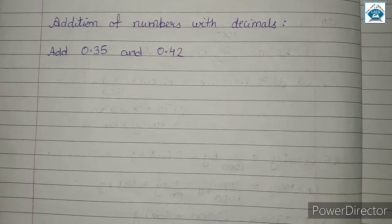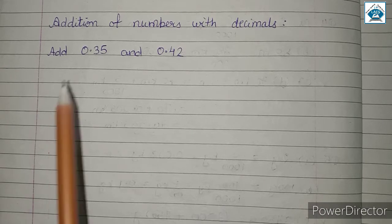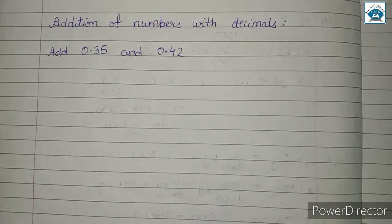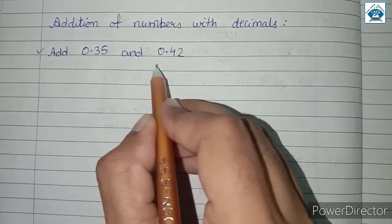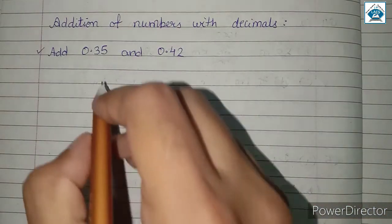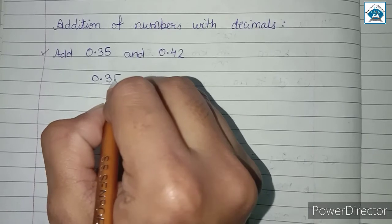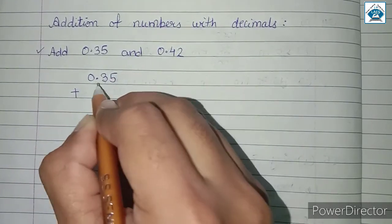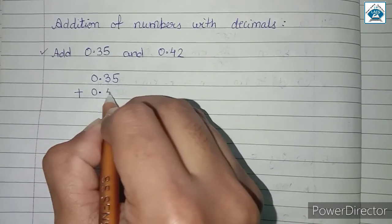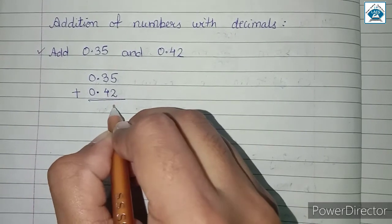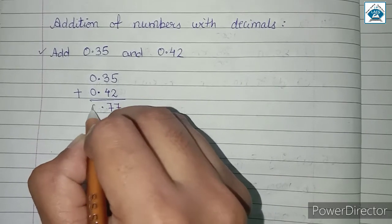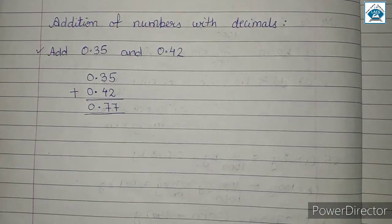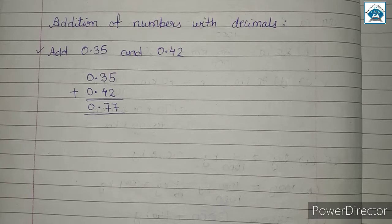Hello students, let us continue chapter 8 decimals. Today we will be discussing the topic addition of numbers with decimals. If we were asked to add 0.35 and 0.42, then how will we do it? It is very simple. We will do vertical addition: 0.35 plus 0.42. Point under point. 5 plus 2 is 7, 3 plus 4 is 7, point as it is, and 0 plus 0 is 0. So when we add 0.35 and 0.42 we get 0.77. We can add decimals in the same way as we add whole numbers.